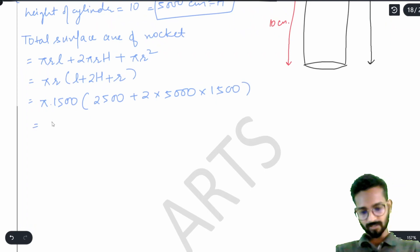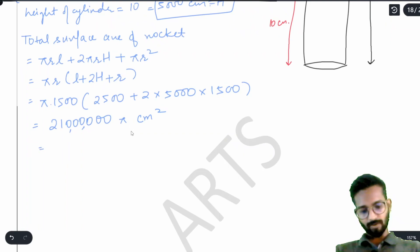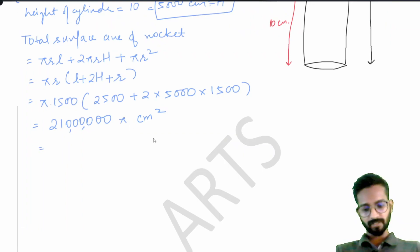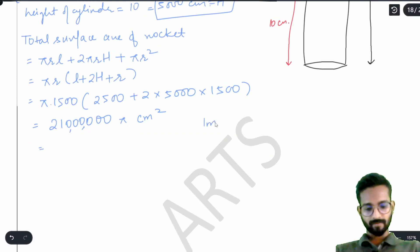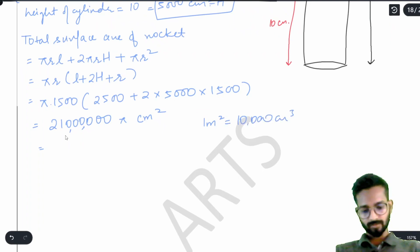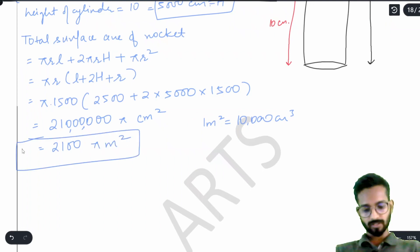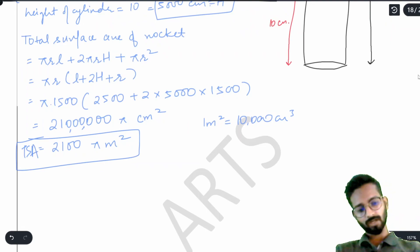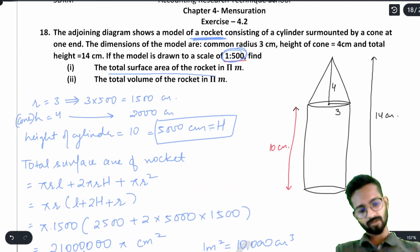Solving: π × 1500 × 14000 = 21,000,000 π cm². Converting to meter²: since 1 m² = 10,000 cm², we get 2100 π m². This is the total surface area of the rocket.